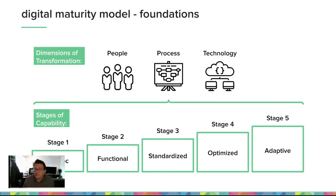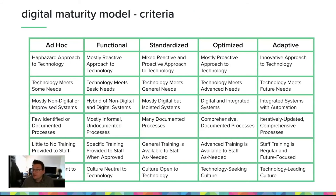You'll see these terms acknowledged in many digital transformation models, and we felt like we really needed to address them distinctly in our model. The stages of capability are the areas in which we place organizations based on how we've evaluated them. We do this by using key indicators of organizational practice that measure capability within each of these dimensions, providing clear milestones of where organizations are in their digital maturity. These are the evaluation criteria used in the pre-survey and ultimately in our digital maturity model, condensed down to make it easier to read.